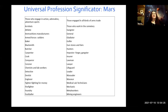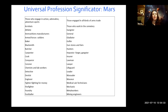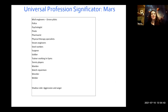Some Martian professions include athletes, acrobats, bakers, blacksmiths, butchers, hunters, golfers, gladiators, leaders, lifeguards, mechanics, pirates, pharmacists, police, steelworkers, surgeons, soldiers, tennis players, and wrestlers.